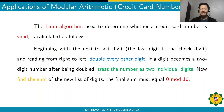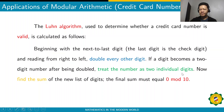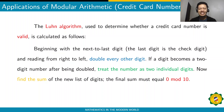Beginning with the next-to-last digit — the last digit is the check digit — and reading from right to left, double every other digit. If a digit becomes a two-digit number after being doubled, treat it as two individual digits. Then find the sum of the new list of digits. The final sum must equal 0 modulo 10, meaning the remainder is 0 when you divide it by 10.